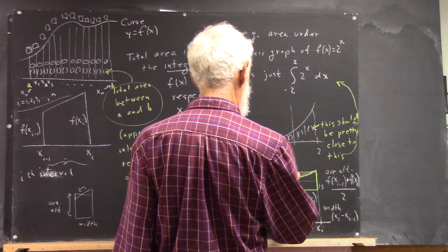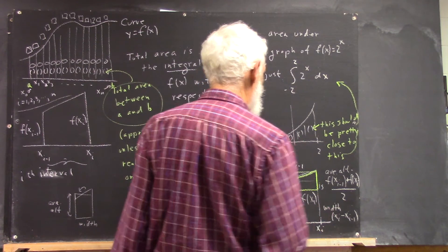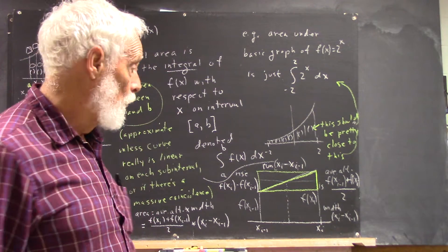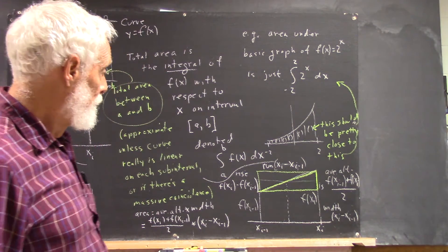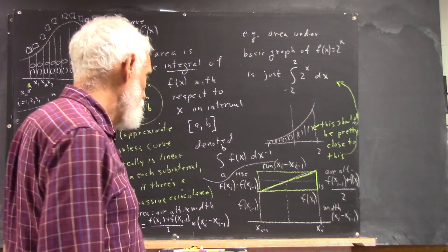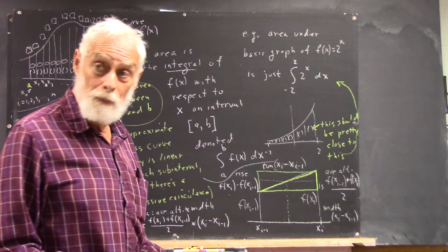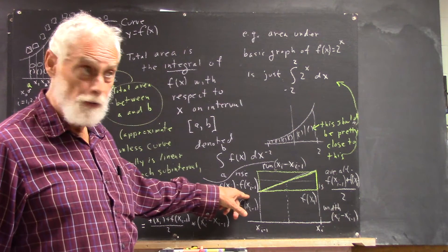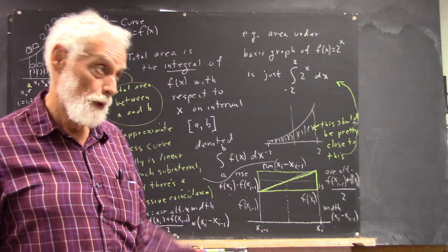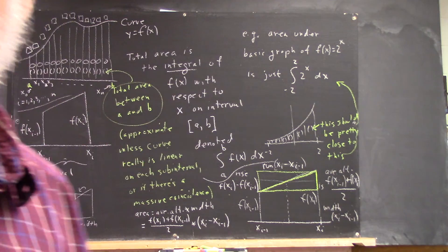is this, right? So, the slope is what? Well, it's going to be this divided by this. And I don't have room to write that because I've not left myself enough room on the board. But I'll kind of leave that to you. It's going to be F of XI minus F of XI minus 1 divided by XI minus XI minus 1, right? Okay. Thank you.